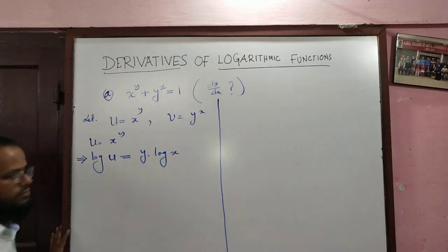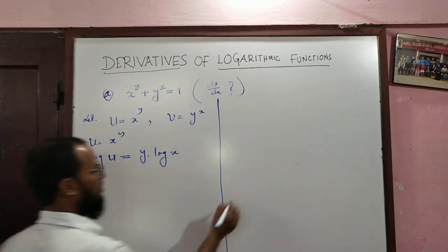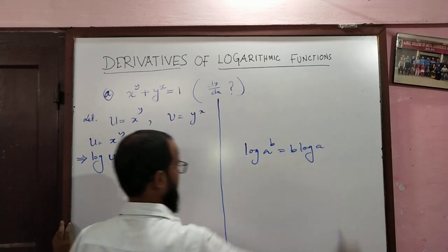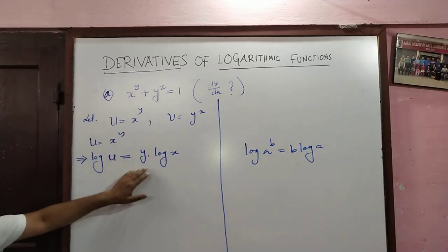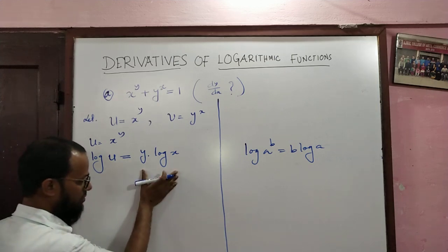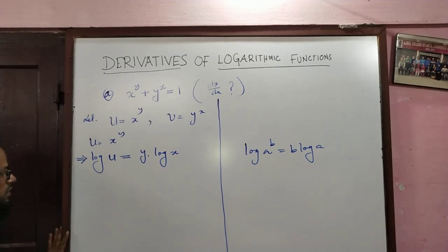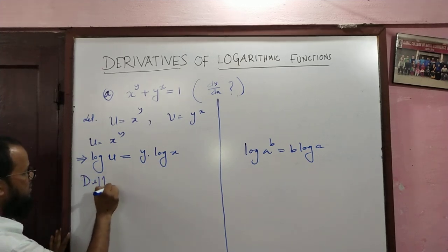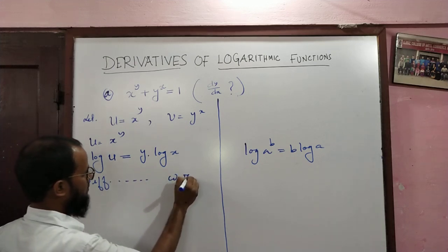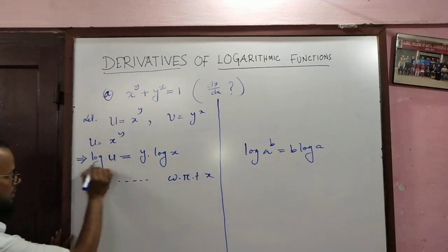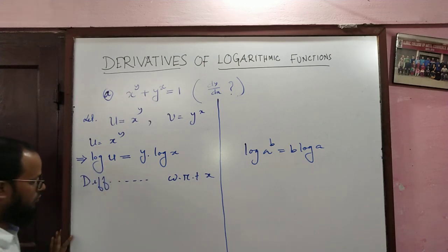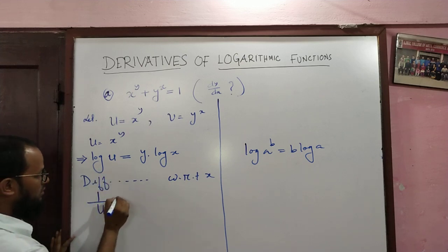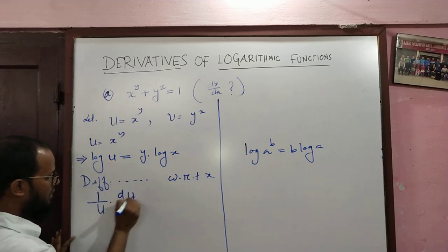I am applying the result that log(x^b) equals b times log x. After taking log, the next step is differentiating both sides with respect to x. The derivative of log u equals 1 by u, and since u is a function of x, we also get du/dx. The right-hand side is a product function.